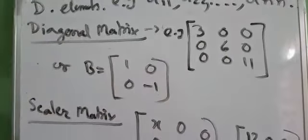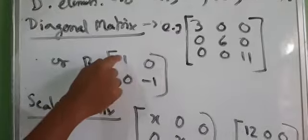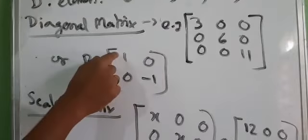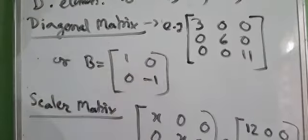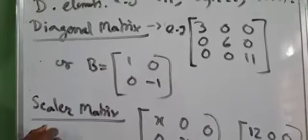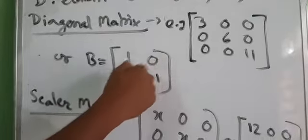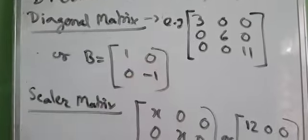This is also an example of a diagonal matrix. In this case, the diagonal elements are 1, which are non-zero, but the non-diagonal elements are zero.